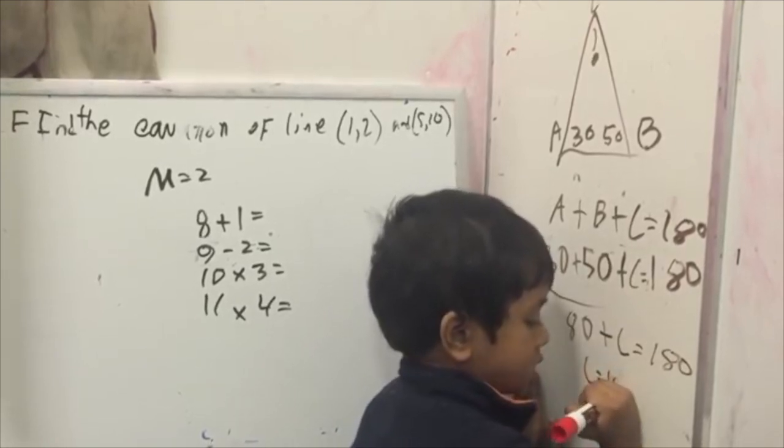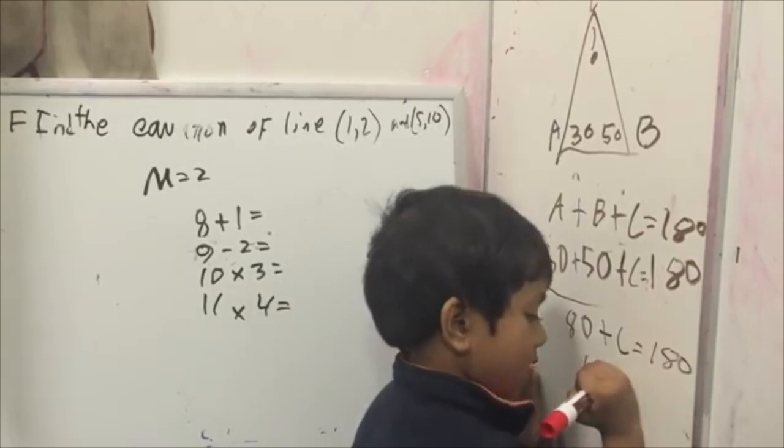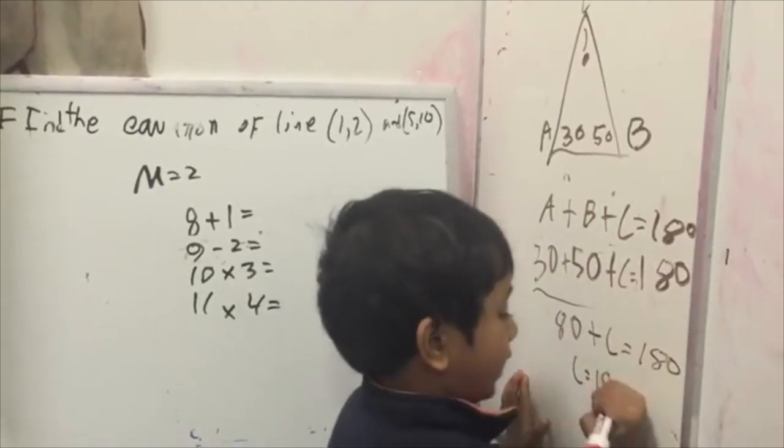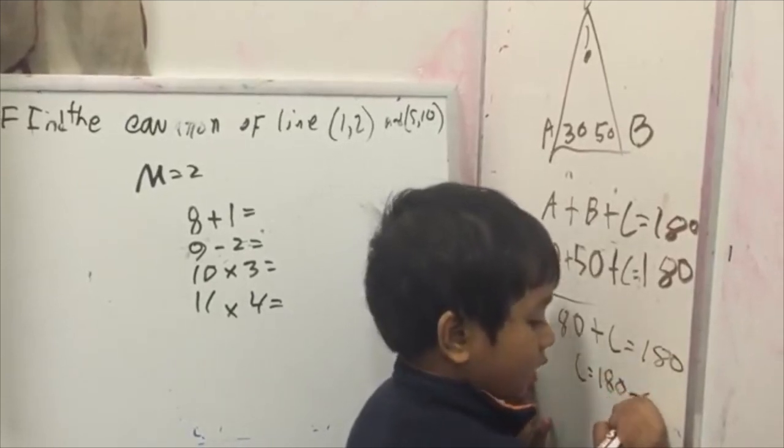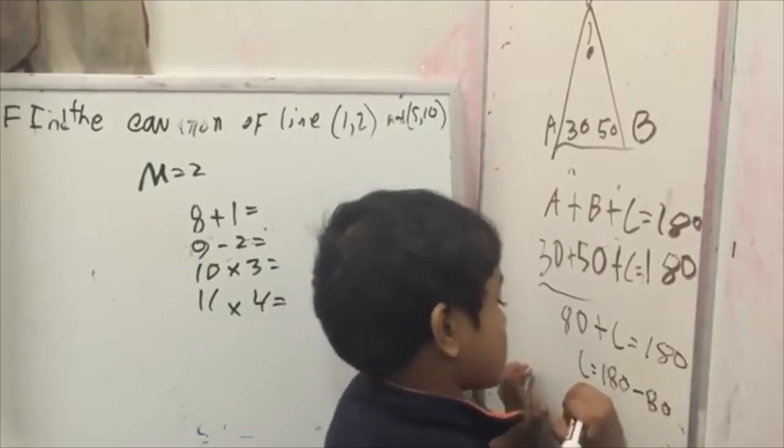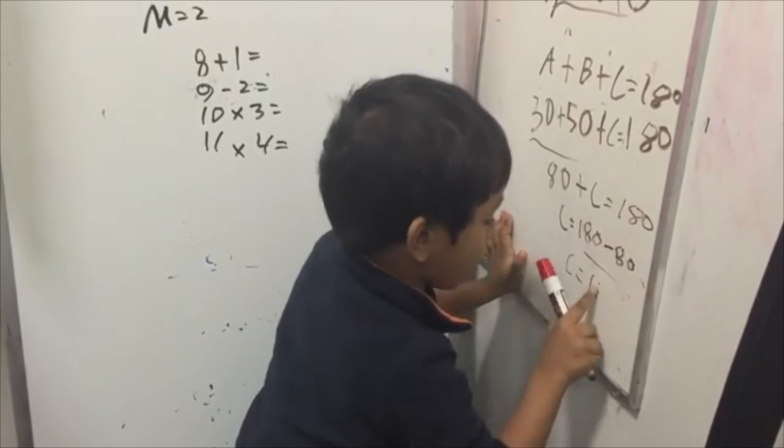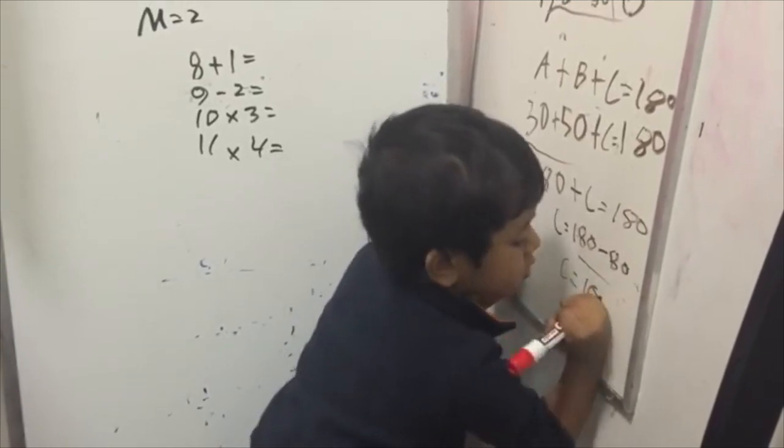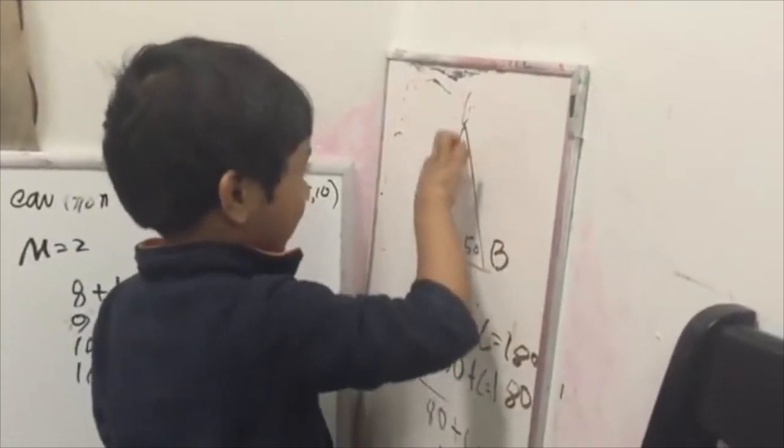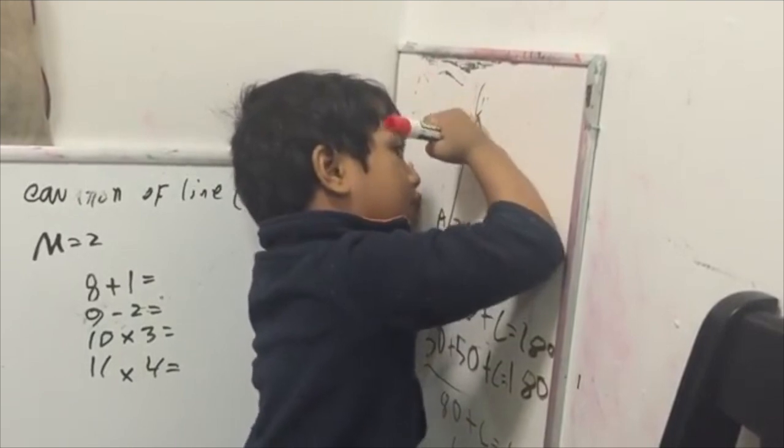180 minus 80, so here's 100 and 100. Let's see, we figured that out. C is 180 and 100.